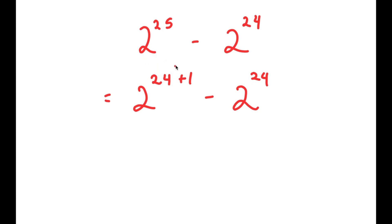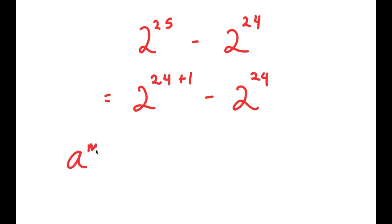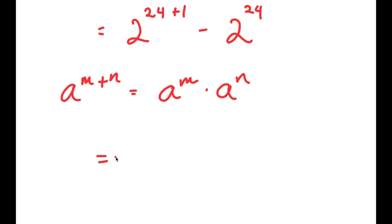The reason I did this is because I want both terms to share 2 to the power of 24. The best way to change 2 to the power of 25 into 2 to the power of 24 times something is to rewrite it as 2 to the power of 24 plus 1. Now I can use the property a to the power of m plus n equals a to the power of m times a to the power of n. So 2 to the power of 24 plus 1 becomes 2 to the power of 24 times 2 to the power of 1, and I still have minus 2 to the power of 24.